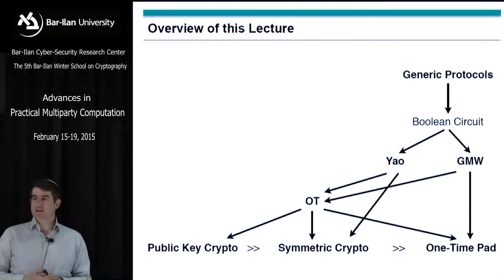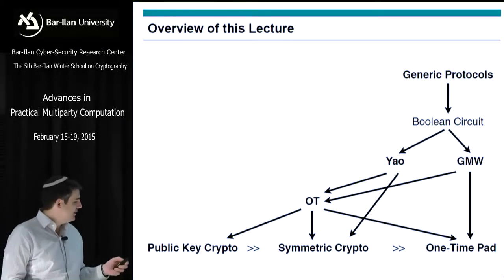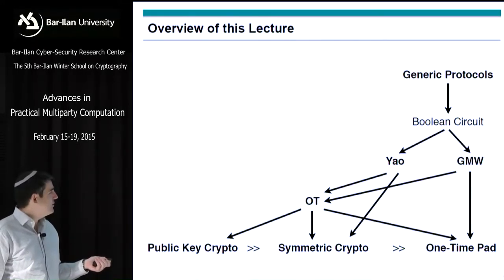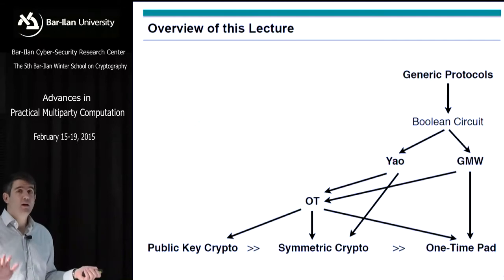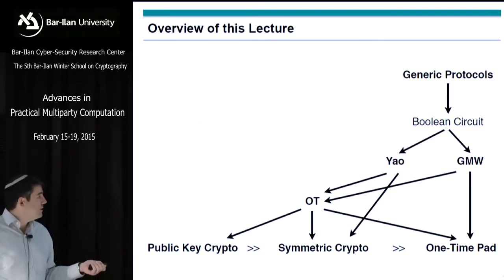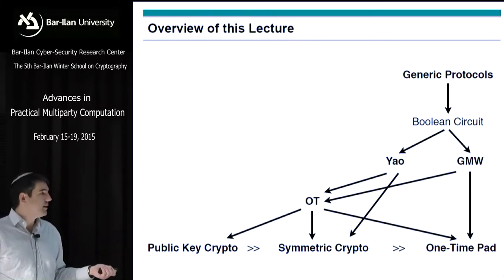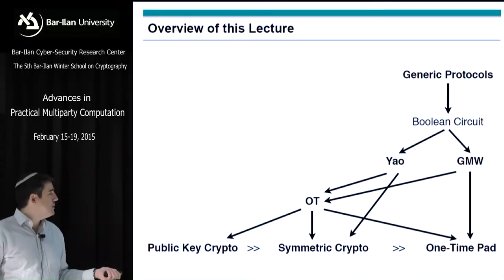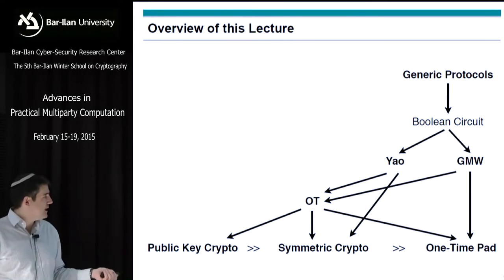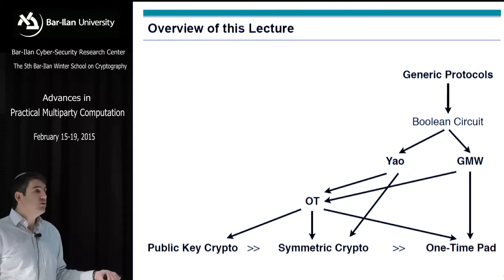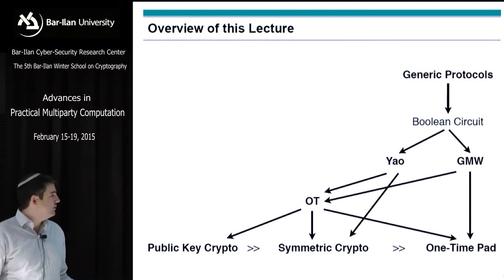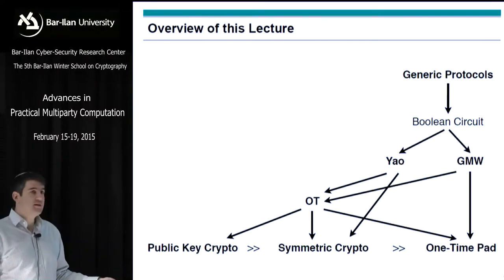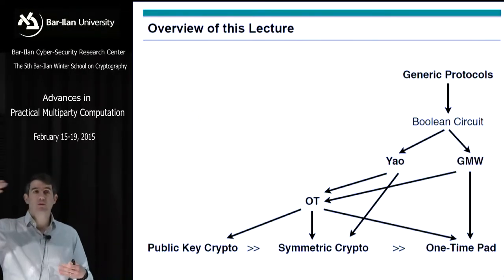This is a slide Thomas likes to show about how we build protocols. We want to build a generic protocol by going through a circuit — Boolean, or on Wednesday Ivan will talk about arithmetic circuits. We can use either Yao or GMW. GMW is based on OT and XORs, which are one-time pads. OT requires public key crypto, symmetric crypto, and XORing — that's the OT extension: some public key crypto for base OTs, then symmetric crypto and XORing. Yao is based on OT and symmetric crypto: you do OT on the input wires, then symmetric crypto to compute each gate.